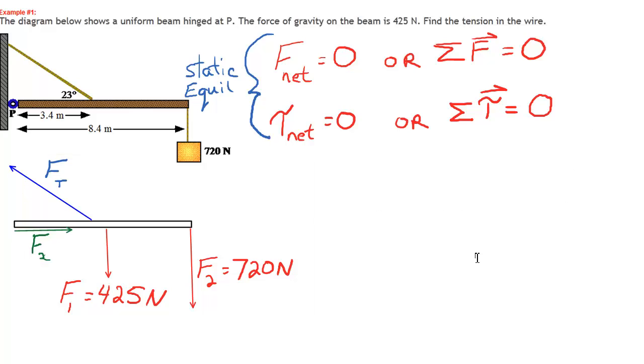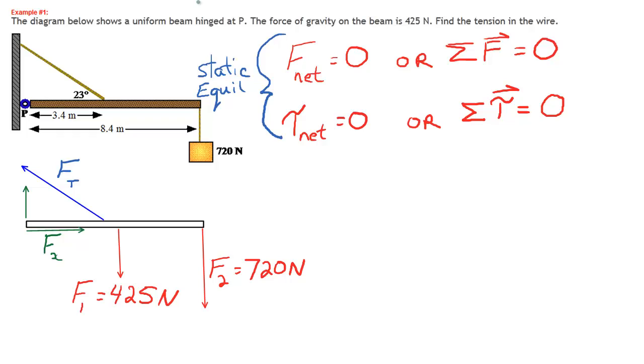There's also a Y force. Now we don't know if the Y force is going to be up or down. It depends on which is winning. The 720 and the 425 are acting down, and there's a Y component of the tension acting up. But we need to recognize that it's there, so we're just going to guess that it's upwards to assist the cable. So we'll just call this force Fy.